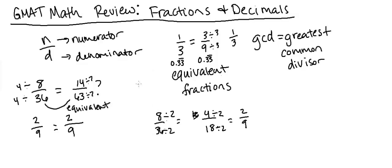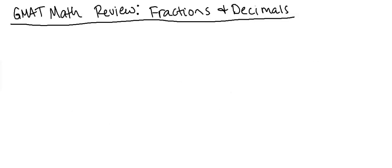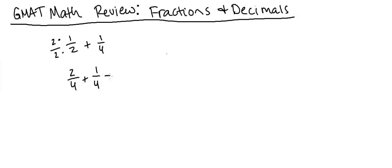Now let's talk about adding and subtracting fractions, and also multiplying and dividing fractions. When adding and subtracting, the only thing we need to worry about is having the same denominator. If I ask what one half plus one fourth is, we first get the denominators the same by multiplying one half by two over two — which equals one, so the value is preserved. Now we have two over four plus one over four, which equals three over four.